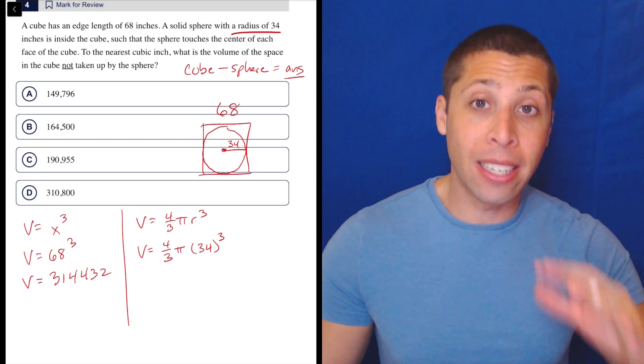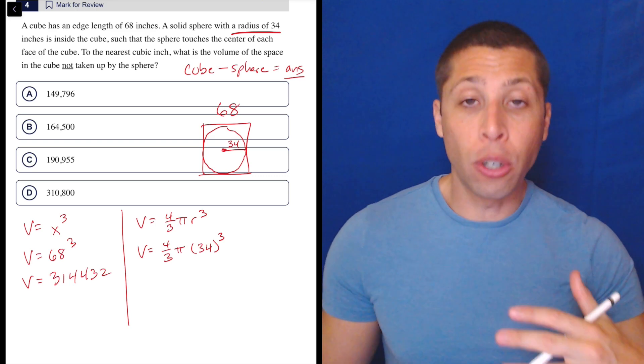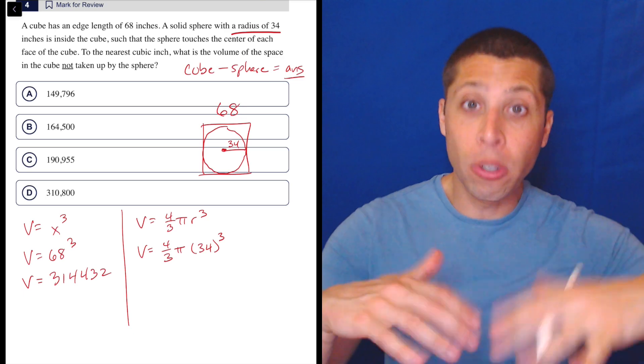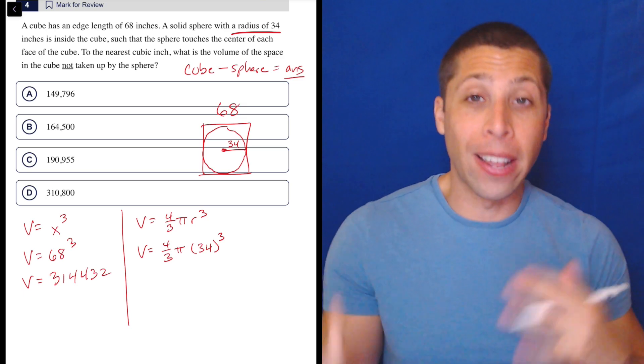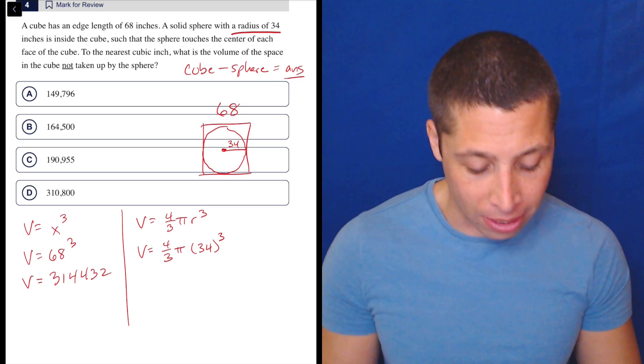So anytime you're thinking about distances with 3D shapes, a good rule of thumb is write it down as a two-dimensional shape, kind of looking at it from some angle, and then try to think about it in those terms. It's a little easier.